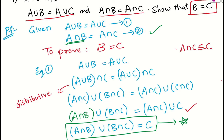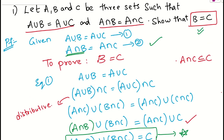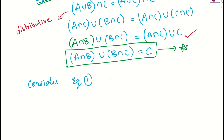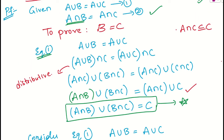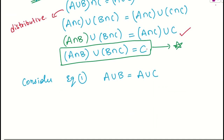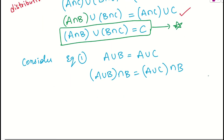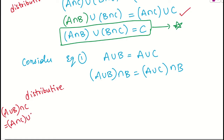Now let us consider equation number one again: A union B is nothing but A union C. This time, let us apply the intersection of B on both sides: A union B intersection B is nothing but A union C intersection with B. Using the distributivity property: A union B intersection B is A intersection B union with B intersection B, and the right side gives A intersection B union with C intersection B.